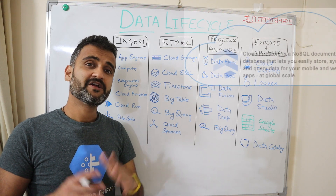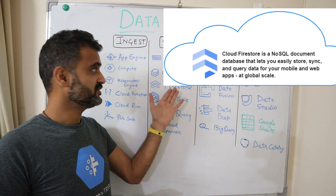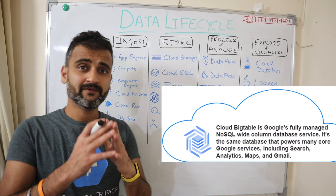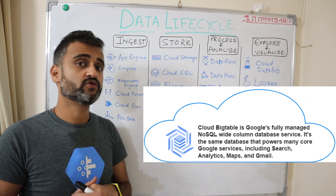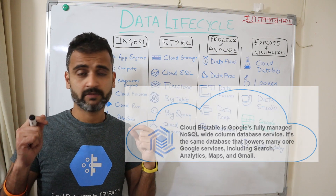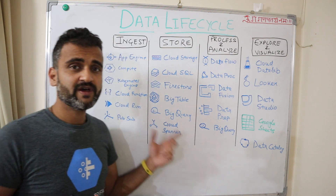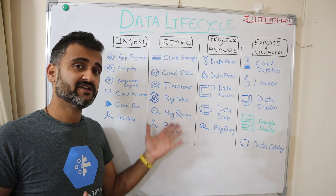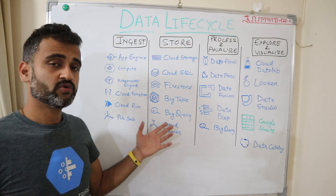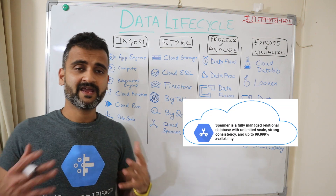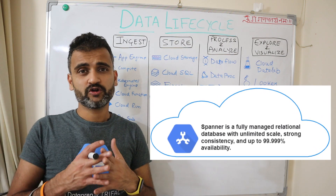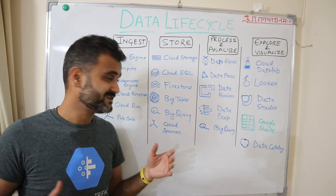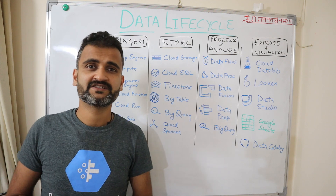Firestore is our NoSQL document database — if you want to store NoSQL data, use Firestore. Bigtable is a NoSQL wide-column database; if you have time series data or very widespread data, Bigtable is extremely fast, especially for time series or event data. BigQuery is very famous for analytical workloads — it is fast, efficient, and your go-to option for analytics. Cloud Spanner is for massively horizontally scaling your relational database; instead of Cloud SQL, which is limited, Cloud Spanner is a serverless GCP offering for managing relational databases at scale.